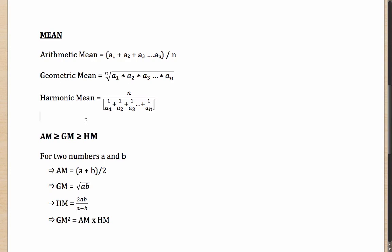It is important to understand where these are used. Arithmetic mean is used in most cases. For example, if you have given five tests and got various scores, your average score will be the arithmetic mean of the values. Similarly, if you take a class of students and their weights, the average weight will be the arithmetic mean.